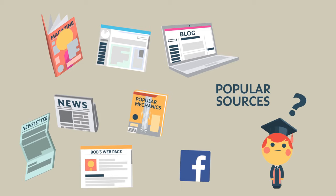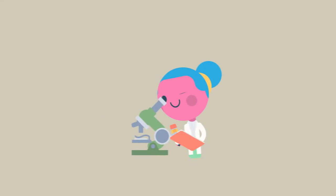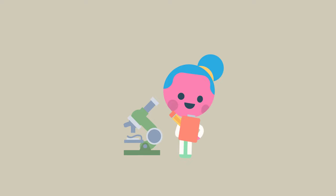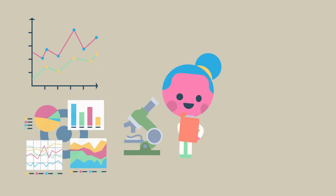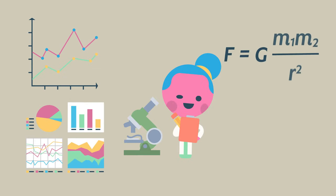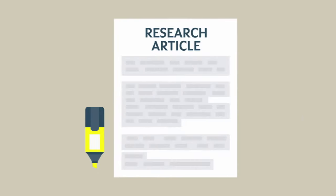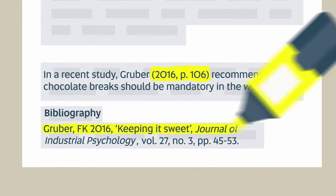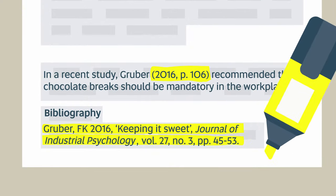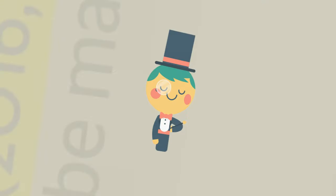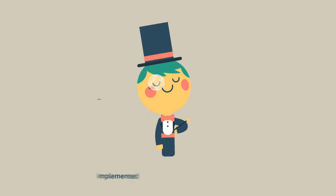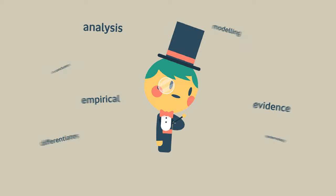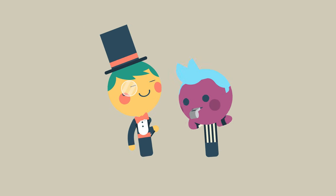Let's look at what a scholarly source is. A scholarly source is written by researchers within a subject area, reports on research findings, contains comprehensive in-text citations and a reference list or bibliography, and uses specialised terminology and a formal writing style.